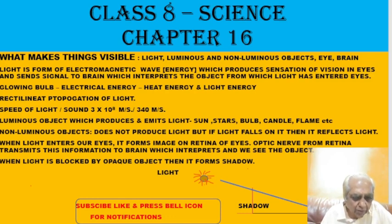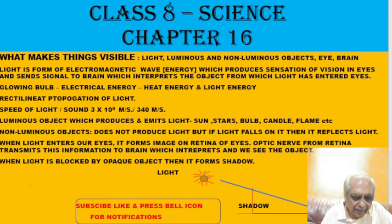The speed of light is much greater than the speed of sound. The speed of light is 3 × 10⁸ meters per second, whereas the speed of sound is only 340 meters per second. We can recognize this because when there is lightning, you first see the light and after some time you hear the sound. The time gap between light and sound is because sound is traveling at a slower speed.